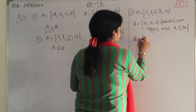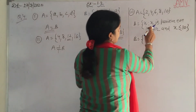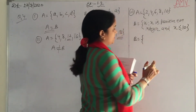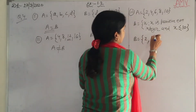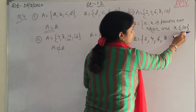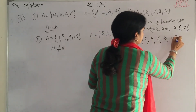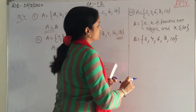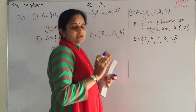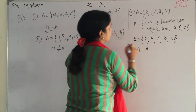Now comparing: A and B both have the same and equal elements — {2, 4, 6, 8, 10}. So A is equal to B.